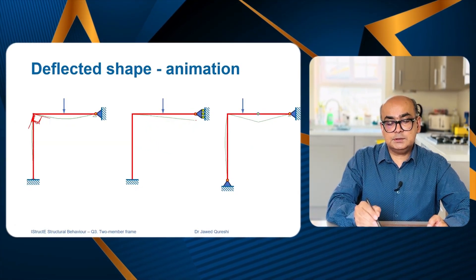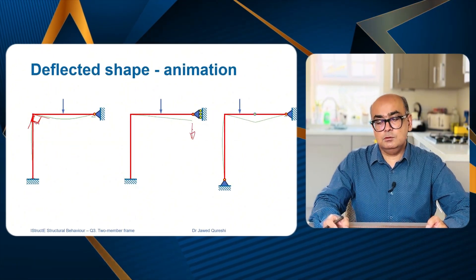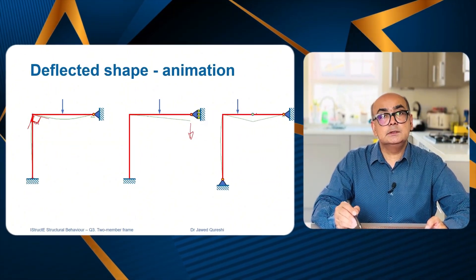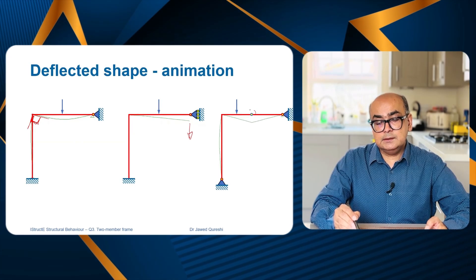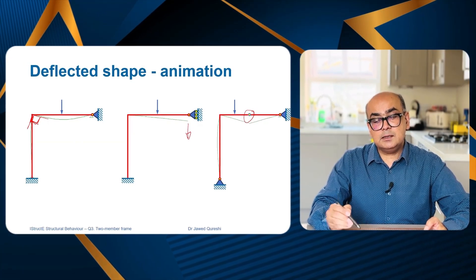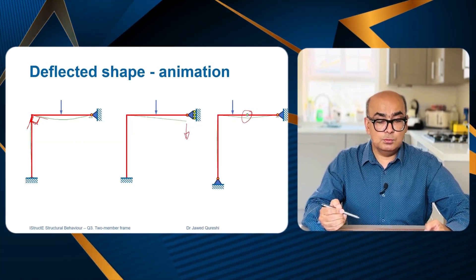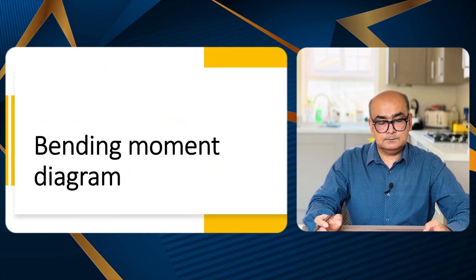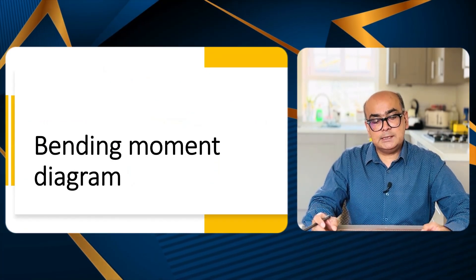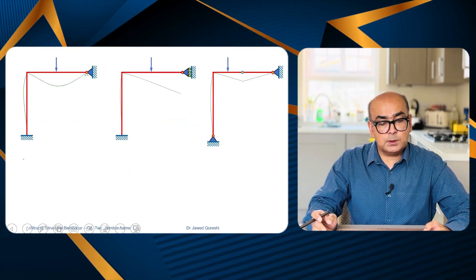Note that because of the roller support in case two, the right point moves down. In case three, the internal pin is causing the beam to sink down. Now let's plot the bending moment diagrams.